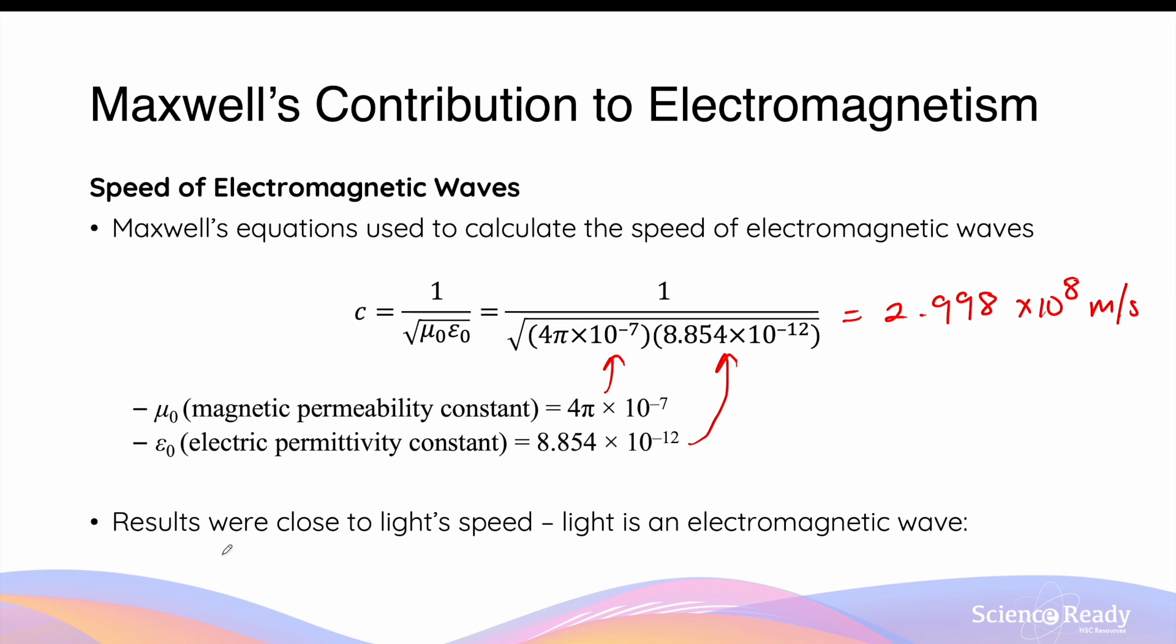At this time, he also noticed that the result was very close to the light speed, and this is where he further predicted that light perhaps is a type of electromagnetic wave.